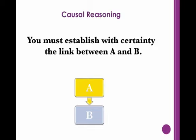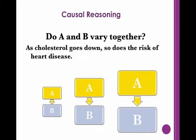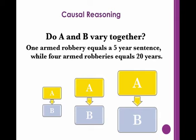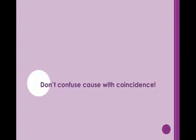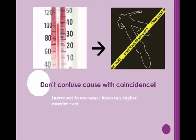Reasoning from cause means that you must establish with certainty the link between one variable and another. For example, a speaker needs to show that the leading cause of heart disease is high cholesterol versus other contributing conditions such as smoking, stress, or diabetes. Furthermore, the cause and effect should also vary together, so reducing one's cholesterol will reduce the risk of heart disease. Or if a person who commits one armed robbery gets sentenced to five years in jail, then a person who commits four armed robberies gets sentenced to 20 years in jail. Effective causal reasoning also means that you should not confuse cause with coincidence. If a speaker makes the claim that ice cream consumption causes an increase in the murder rate, he is missing the true cause of an increased murder rate, namely the hot weather. That people eat more ice cream when the weather is hot is just coincidental to the increase in violent crime.